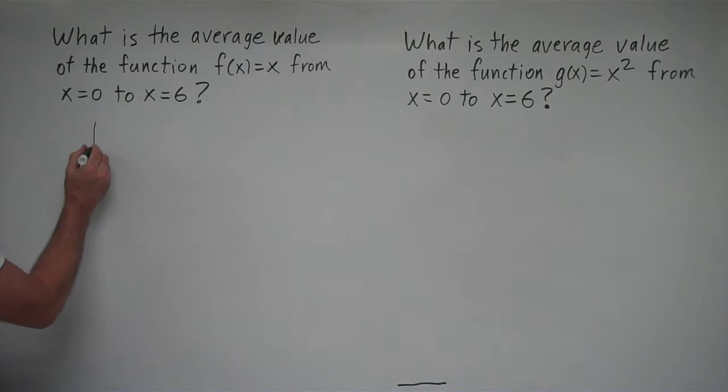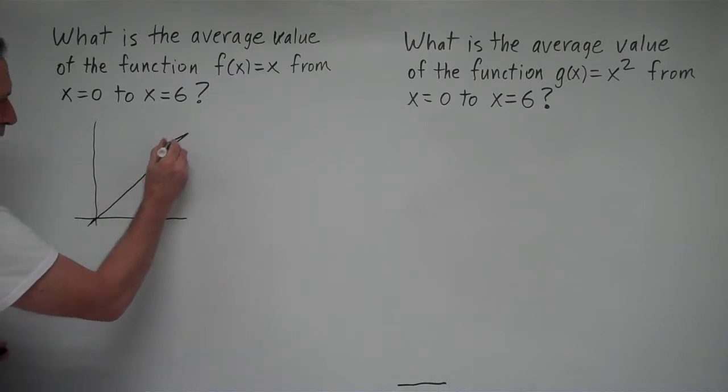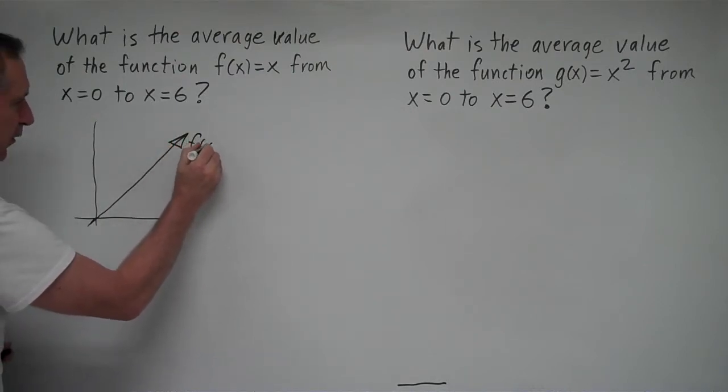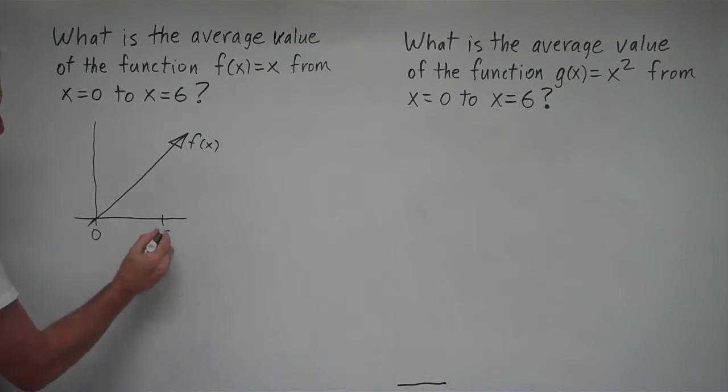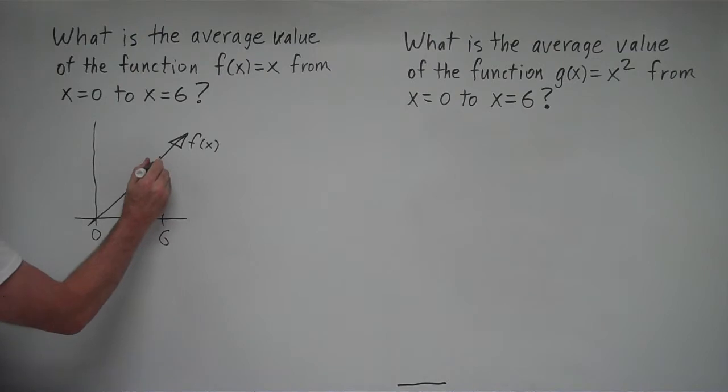And for that we're going to examine graphically what's going on. If we have the function f(x) equals x, which is the linear parent function, and we evaluate this function from x equals 0 to x equals 6, we go up here to x equals 6.